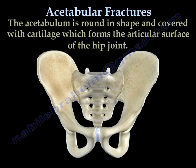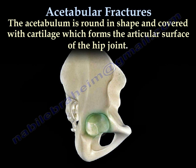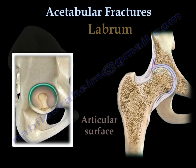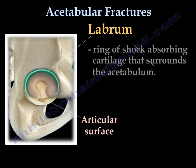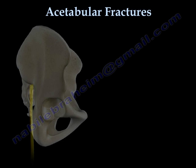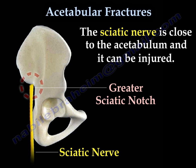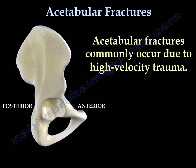The acetabulum is rounded in shape and covered with cartilage, which forms the articular surface. The labrum is a ring of shock-absorbing cartilage that surrounds the acetabulum. The sciatic nerve comes out from the greater sciatic notch and is close to the acetabulum and can be injured. Acetabular fractures commonly occur due to high velocity trauma.